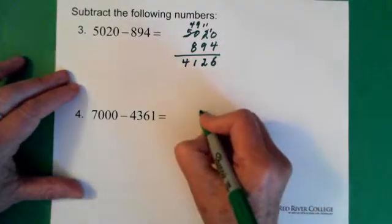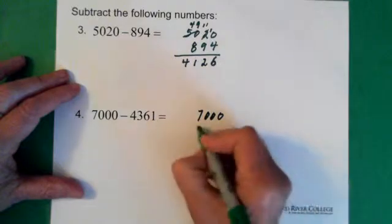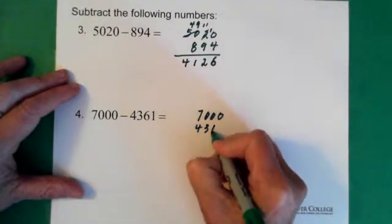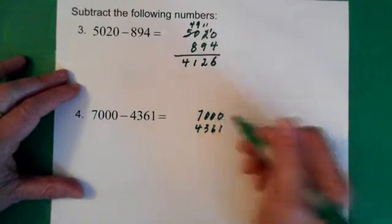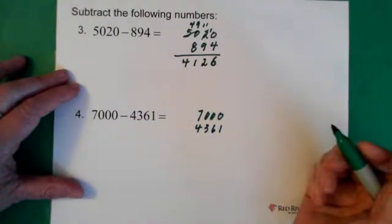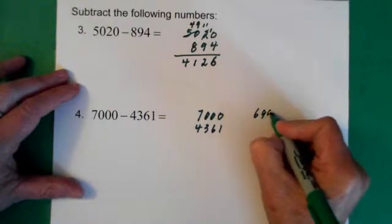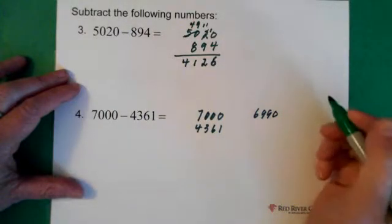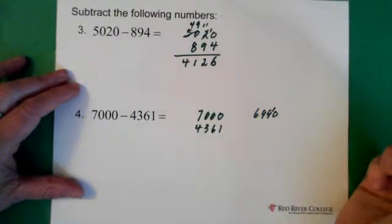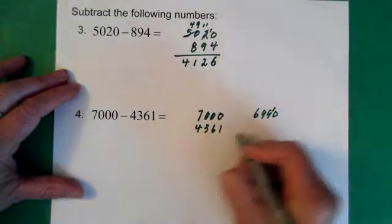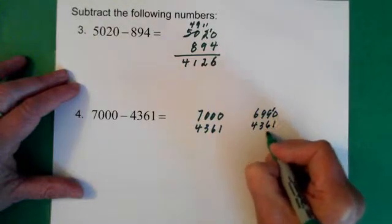Last question: 7,000 minus 4,361. So again, we take 10 out of the 7,000. We end up with 6,990, plus the 10. And the 10 is the little 1 that's up here. And we're subtracting 4,361.